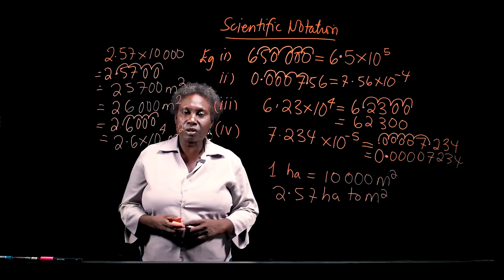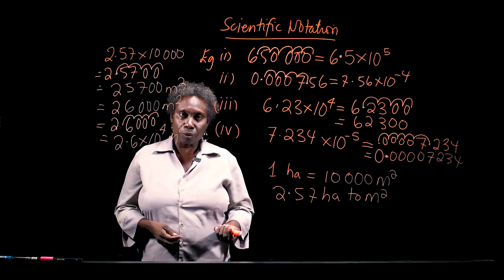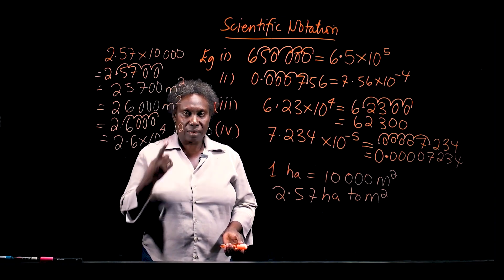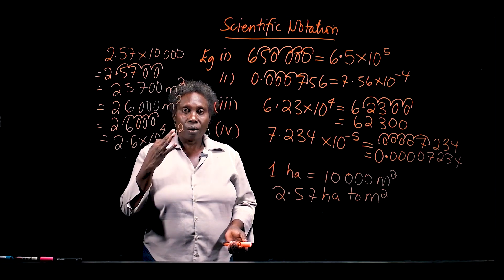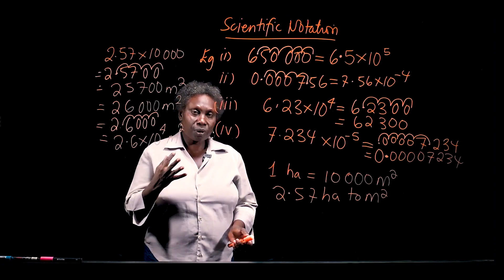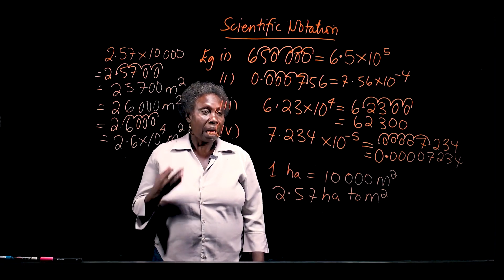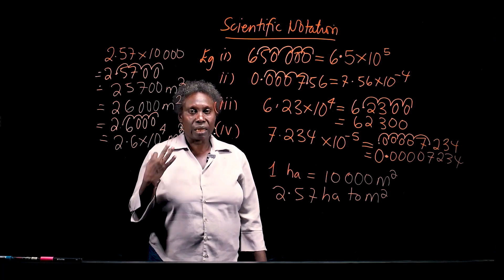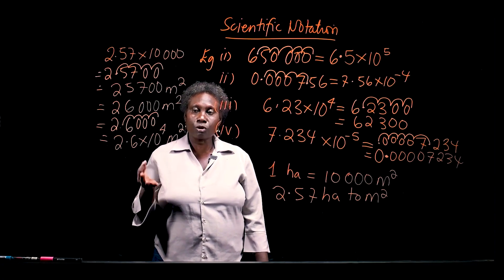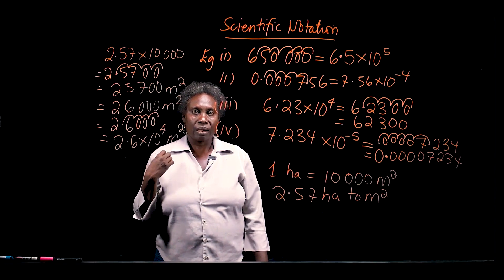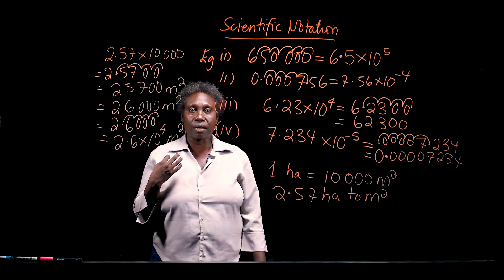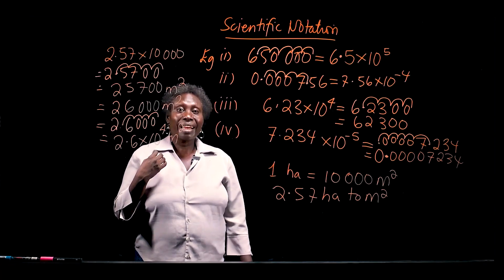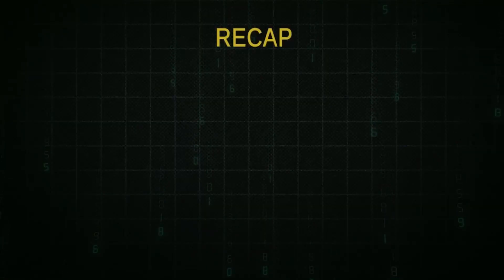That brings us to the end of our lesson on scientific notation. We have learned writing ordinary numbers as scientific notation, writing scientific notation numbers as ordinary numbers, and rounding numbers in scientific notation to the correct number of significant figures. In our next lesson, we are going to look at directed numbers. Thank you.